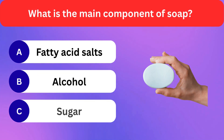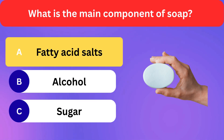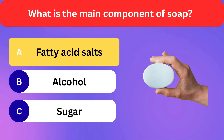What is the main component of soap? Fatty acid salts, Alcohol, Sugar. Correct answer is fatty acid salts.